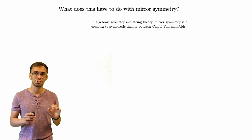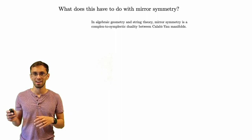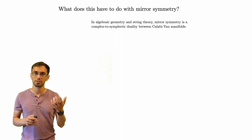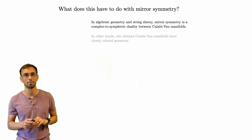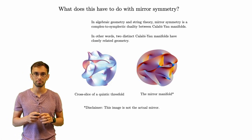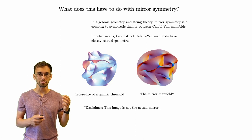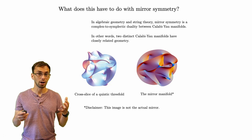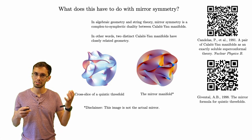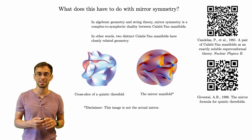Mirror symmetry is already a thing, so I should tell you the relationship between statistical mirror symmetry and mirror symmetry to justify the name. In algebraic geometry and string theory, mirror symmetry is a complex-to-symplectic duality between Calabi-Yau manifolds: two distinct Calabi-Yau manifolds have closely related geometry. For example, if we have a quintic threefold — a canonical example of a Calabi-Yau manifold — there's a mirror manifold whose geometry differs from the original but is closely related. The idea is that the complex geometry on one side has something to do with the symplectic geometry on the other.